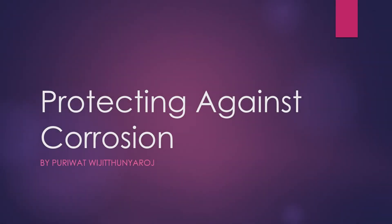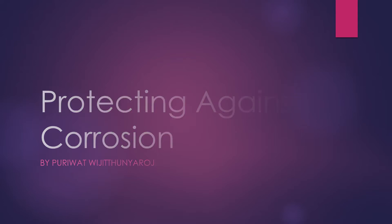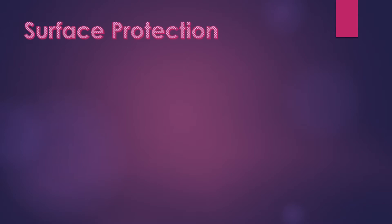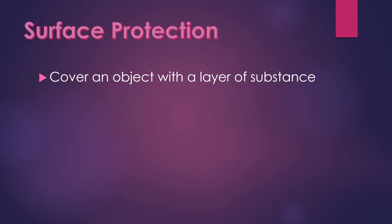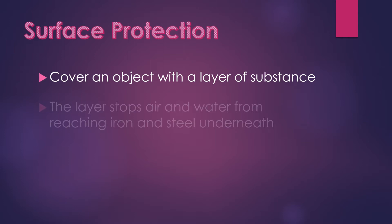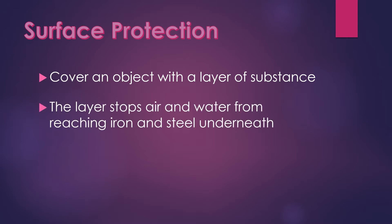Hi everyone, today I'm gonna talk about protecting against corrosion. Surface protection is the protection that will cover an object with a layer of substance. The layer stops the air and water from reaching iron and steel underneath.